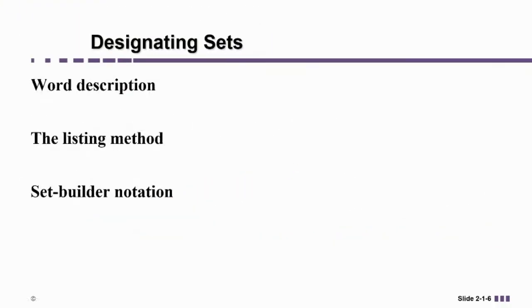As an example of a set that we could describe using words, you could say the set of even counting numbers less than 10. By the way, counting numbers is referring to exactly what it sounds like. It's the set of numbers that starts with one, two, three, and so on. It's how we learn to count when we're a kid.